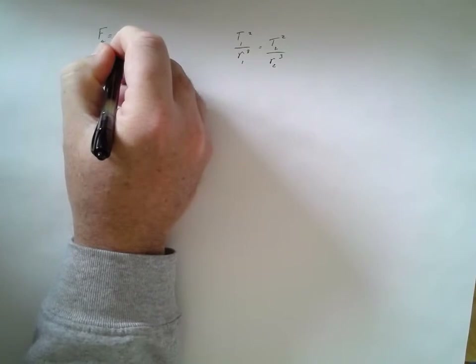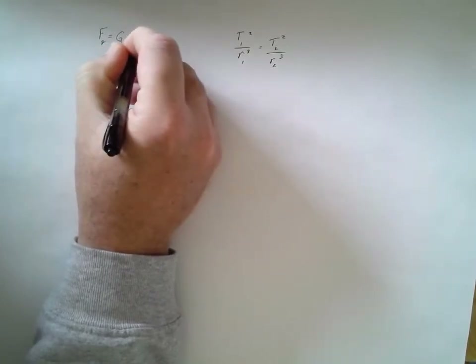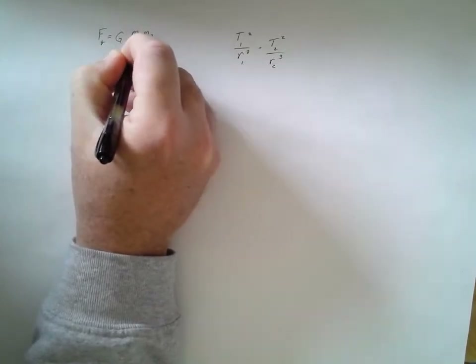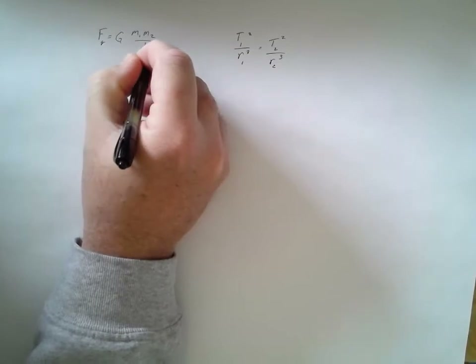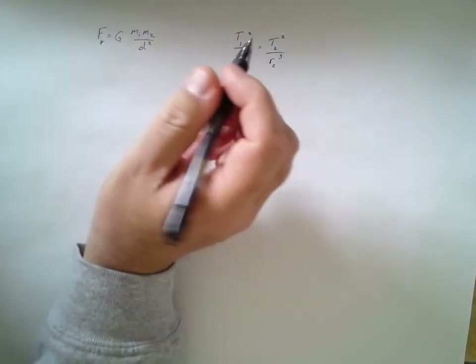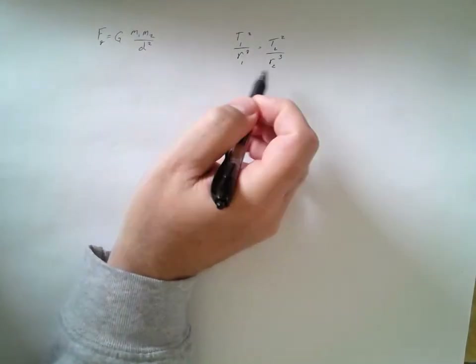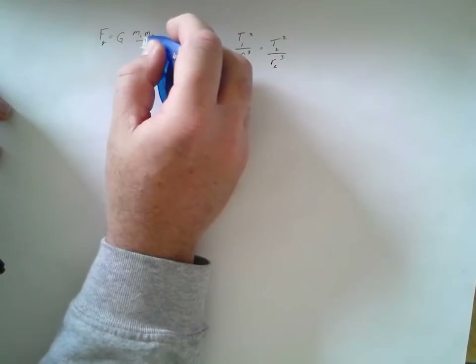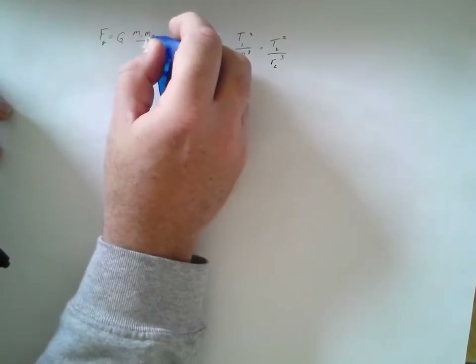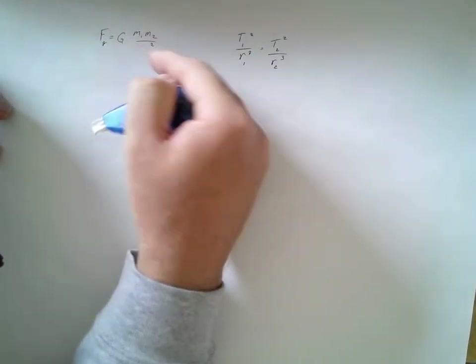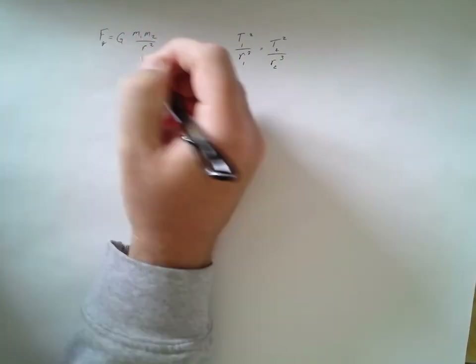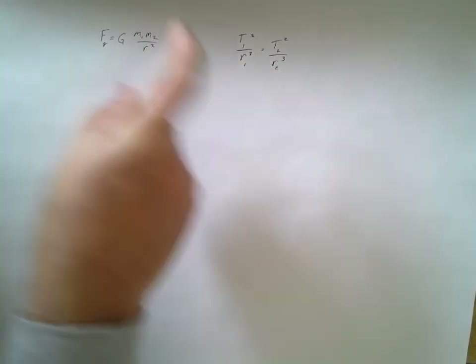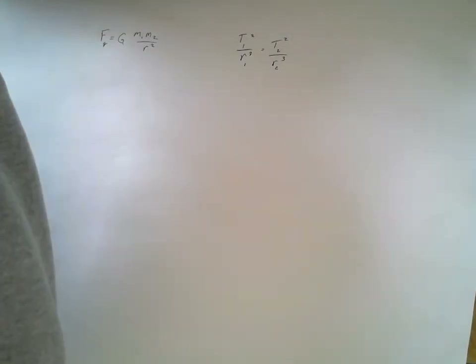The Universal Law of Gravitation states that the force of gravity equals G times m1 times m2 divided by d squared. I'm going to change d squared to r squared so we stay consistent with the r notation used in Kepler's Third Law, and show that these two laws are related to each other.